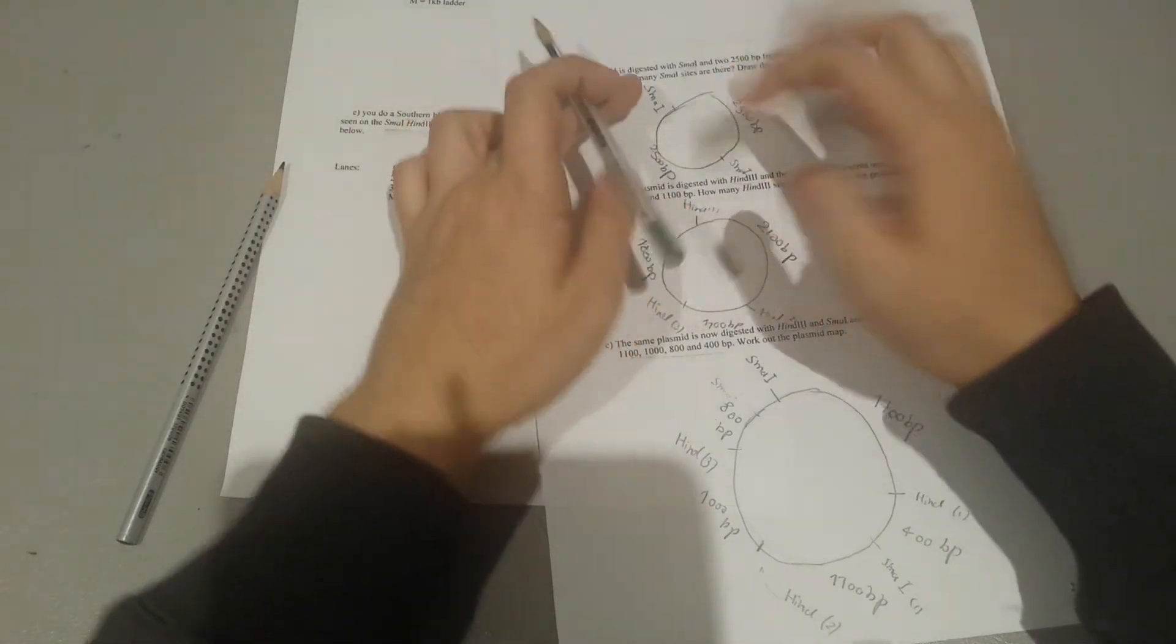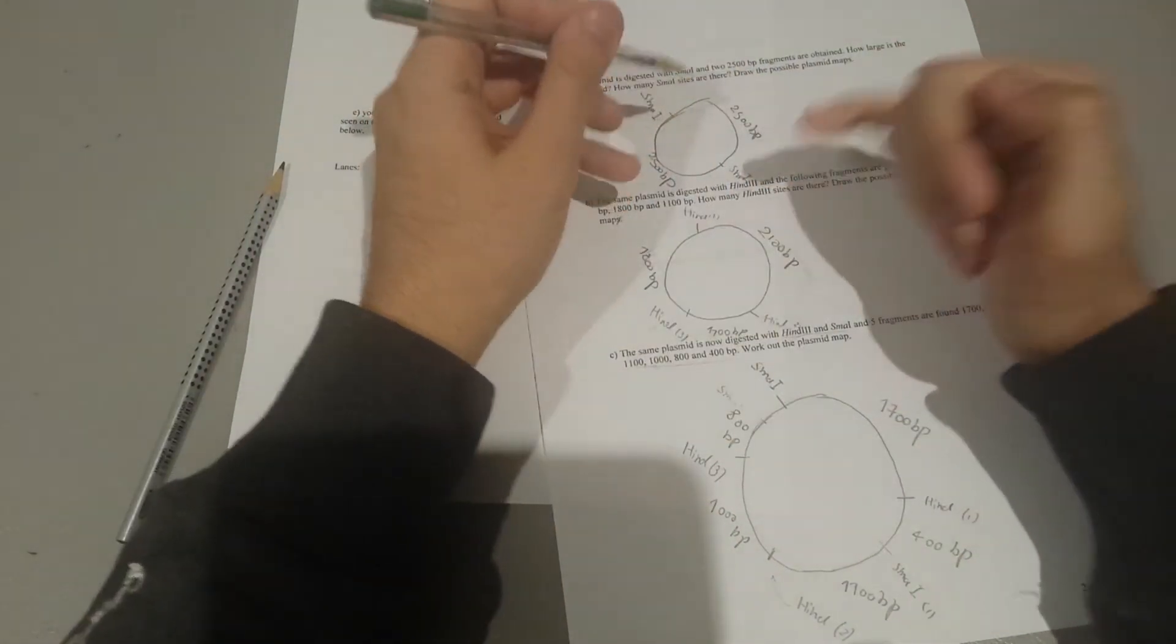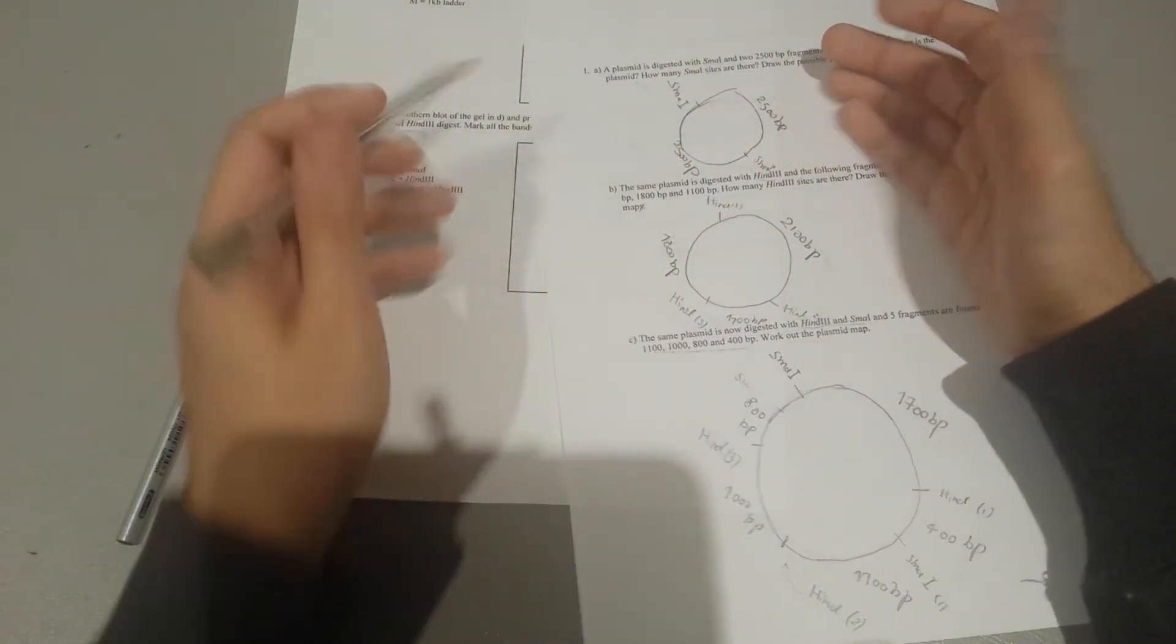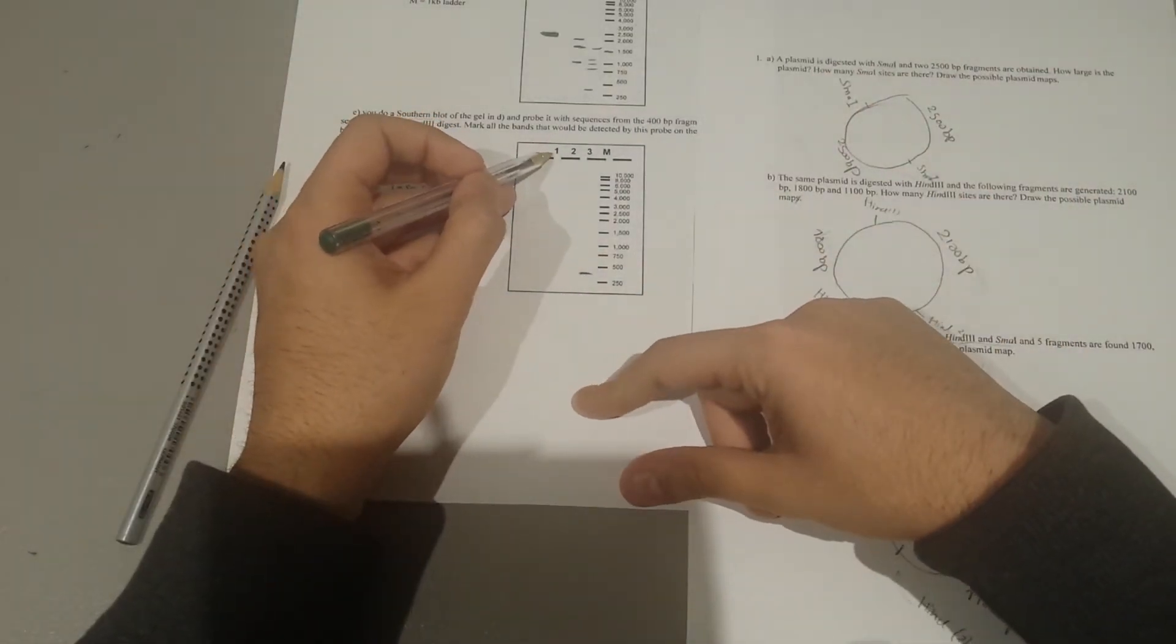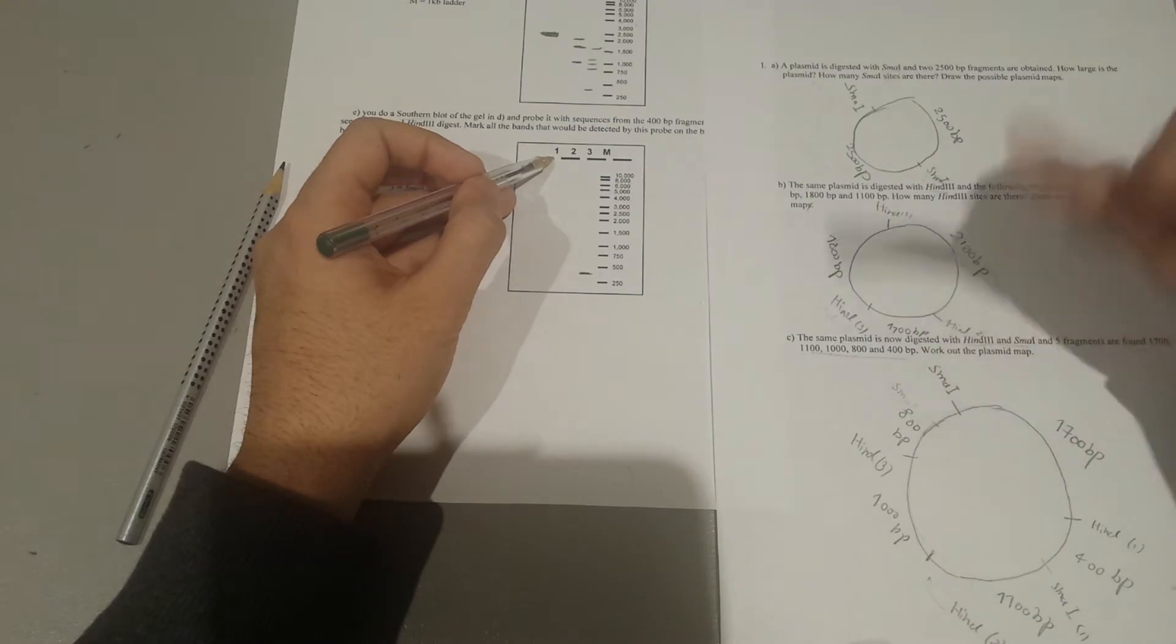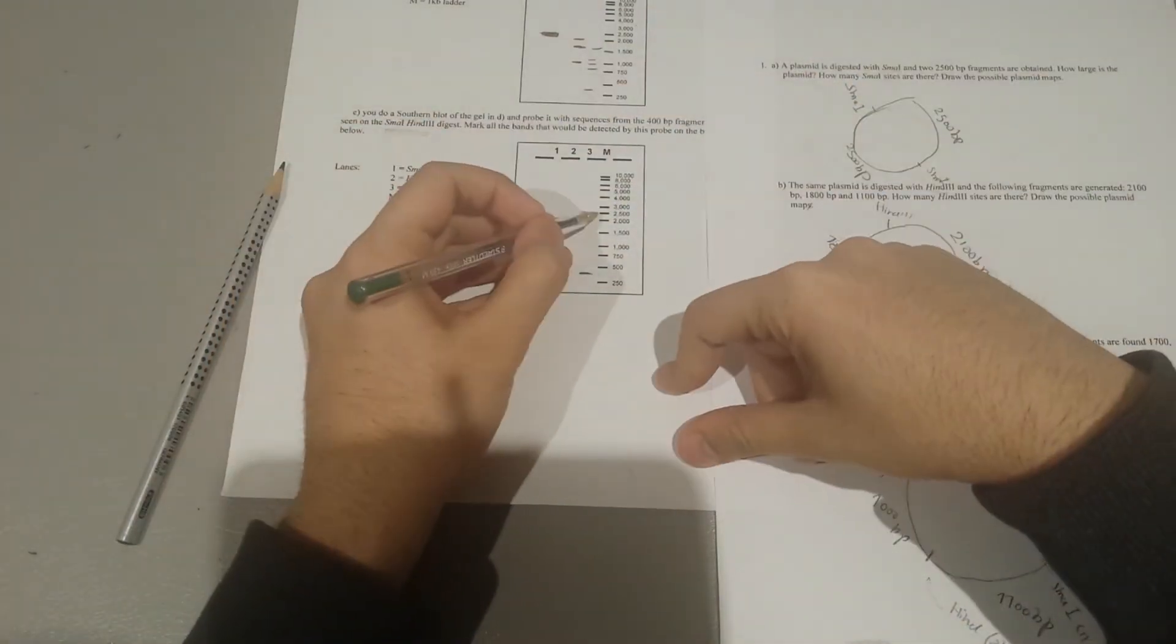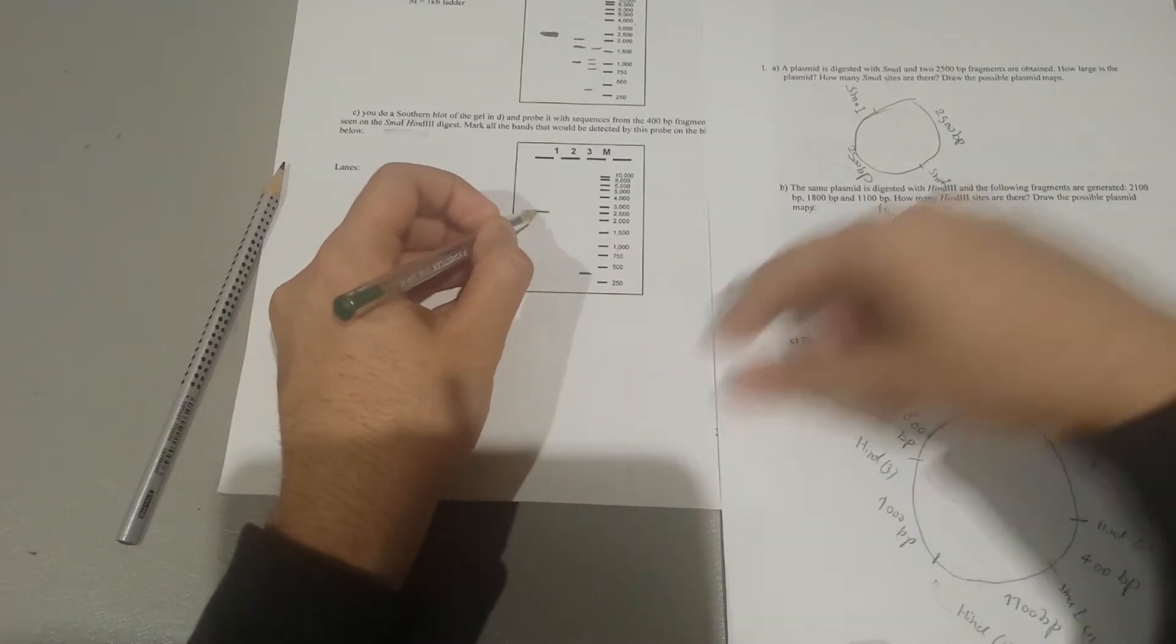You're not going to form a 5000 because it's two distinct sites. You're going to find a 400, match it where you can find it here. So for example, you can find it in the 2500 base pairs in the first digest. So what do you do? You see here as well, that probe would bind to this bigger fragment. So then here you're going to find 2700.